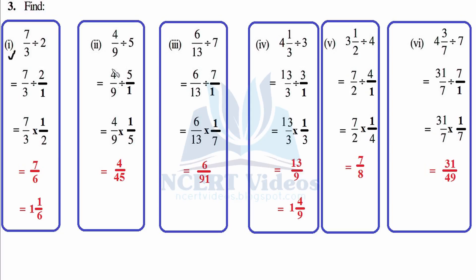Here: 4/9 as it is, placing 1 below the denominator of 5. Now flip it to 1 over 5. 4 times 1 is 4 over 9 times 5 is 45 — it is proper. 6/13 as it is, placing 1 in the denominator of 7, then changing sign to multiplication and flipping. 6 times 1 over 13 times 7 is 91 — it is again proper, as numerator is smaller than denominator.